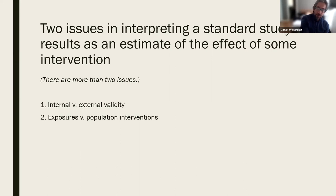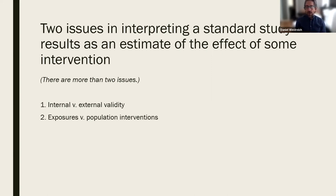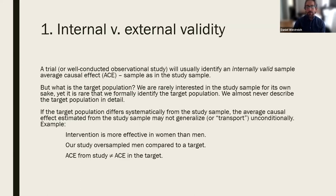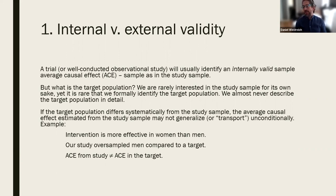So there are more than two issues in interpreting standard study results as an estimate of intervention effects under real-world conditions. These two issues — more broadly stated — are the question of internal versus external validity, and the question of exposures versus population interventions.